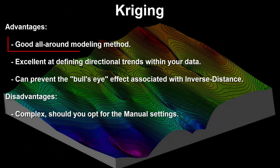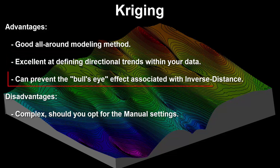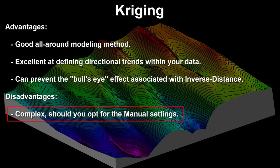Advantages: kriging is a good all-around modeling method. It's excellent at defining directional trends within your data, and it can prevent the bullseye effect associated with inverse distance. The disadvantages are that it's complex should you opt for the manual settings.